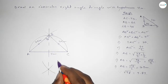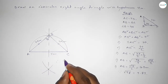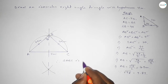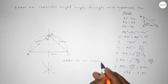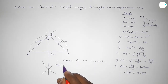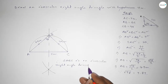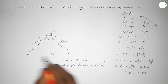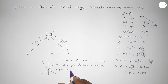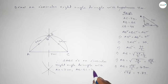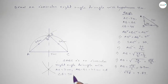So BC equals 4.9 centimeters, AB equals 4.9 centimeters, and AC equals 7 centimeters. Therefore triangle ABC is an isosceles right angle triangle with only the given hypotenuse AC equal to 7 centimeters, and two equal sides AB equal to BC equal to 4.9 centimeters, with angle B equal to 90 degrees. That's all — thanks for watching. If this video is helpful to you, please share it with your friends.